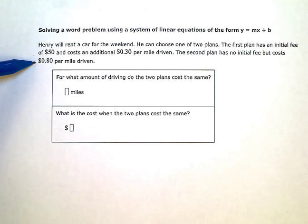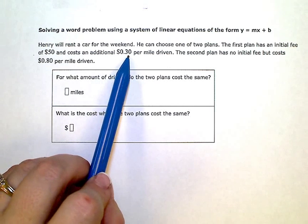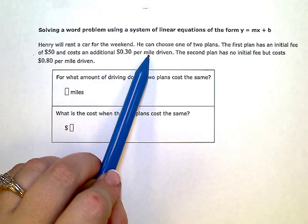Since I'm dealing with information that has a start value and then adding or subtracting a per mile amount, I know I'm going to be setting up equations in slope intercept form.